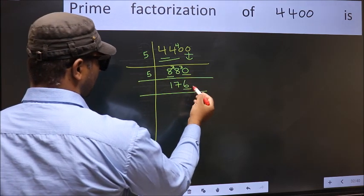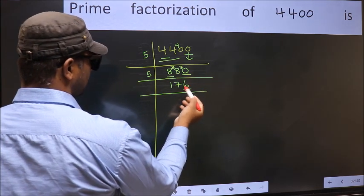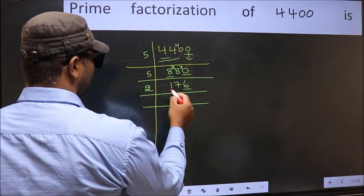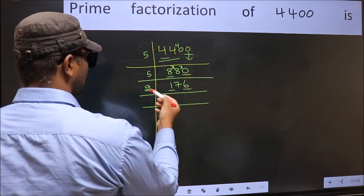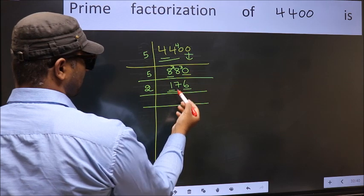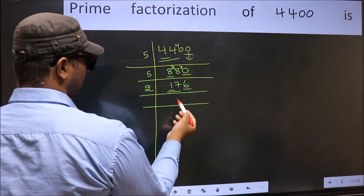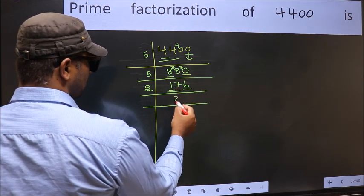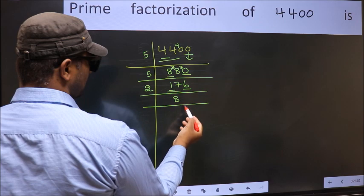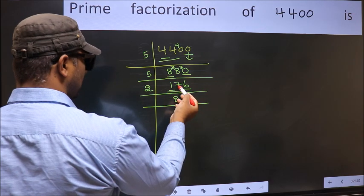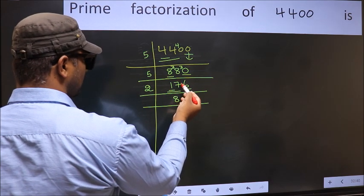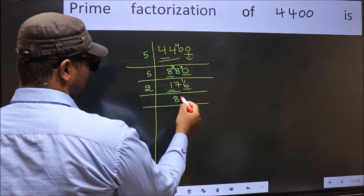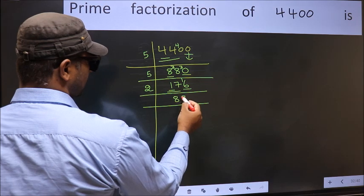Now the last digit is even, so take 2. First number 1 is smaller than 2, so take 2 numbers: 17. A number close to 17 in the 2 table is 2 eights = 16. 17 minus 16 = 1, carried forward 16. When do we get 16 in the 2 table? 2 eights = 16.